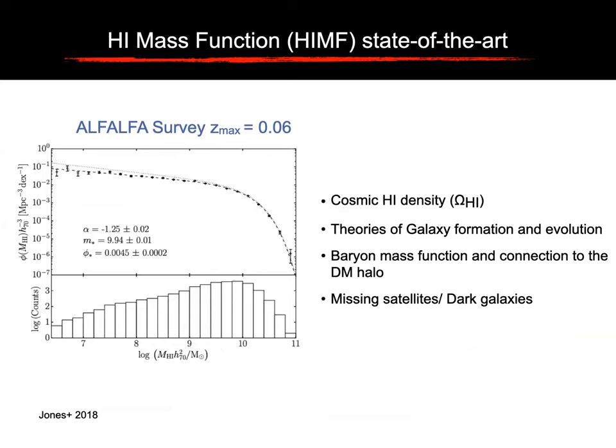So what is the HI mass function and why do we need it? The shape of any mass function determines how gas, stars, or whatever you are counting in the universe are distributed over galaxies of different mass in a particular volume. What's important is that the stellar mass function in combination with the HI mass function — they all go into cosmological simulations of galaxy formation and evolution — any model is supposed to reproduce these values at redshift zero. So you'd better be sure you measure them correctly. The state-of-the-art HI mass function had been conducted with the ALFALFA survey. ALFALFA was a survey conducted by the Arecibo telescope, which unfortunately has been destroyed recently. It's a single dish telescope so it was very sensitive — they could detect many galaxies — but they could not resolve any of them.